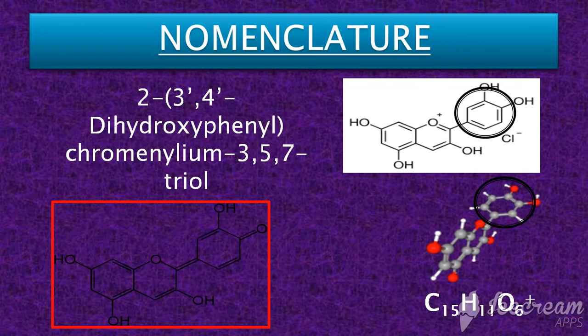The side chain at C2, enclosed in a black circle, lies in a different plane. There is also an alternate structure for cyanidin shown in the red box.